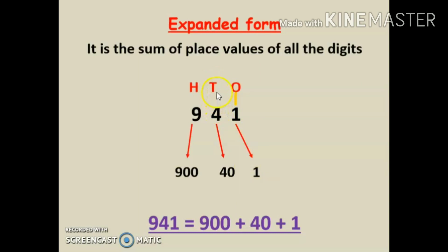I can see that one is lying under the ones place, so the place value of one is one. Four is lying under the tens place, so the place value of four is forty. Nine is lying under the hundreds place, so the place value of nine is nine hundred.